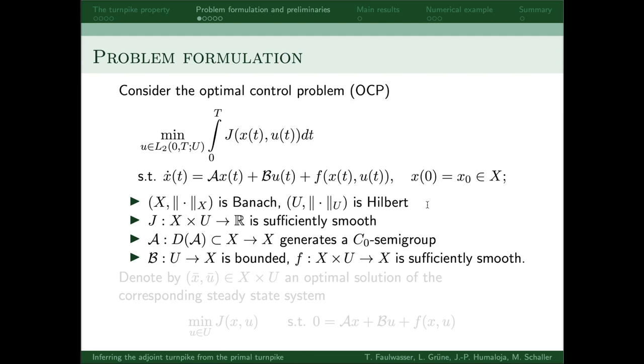Here the state space X is a Banach space, and the input space U is a Hilbert space, which can be finite or infinite dimensional. The function j is sufficiently smooth, this A is the generator of a strongly continuous semi-group on X, this B is a bounded linear operator, and the f-function is sufficiently smooth.